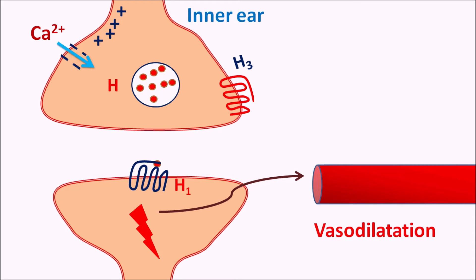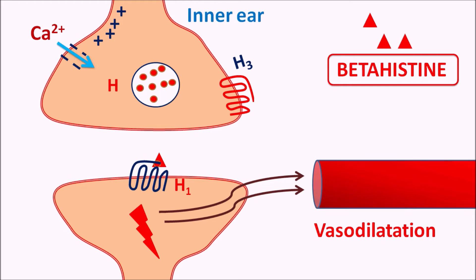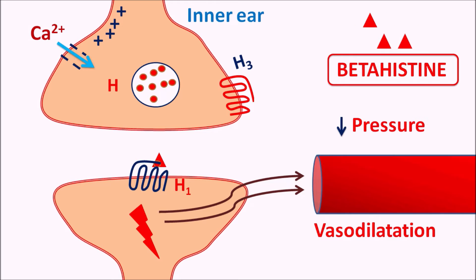When H1 receptors are activated, they produce vasodilation. In this way, histamine plays a key role in producing the vasodilatory response within the inner ear. But in Meniere's disease, we observe increased pressure within the endolymphatic space, so in order to reduce the pressure these blood vessels should be more dilated. Betahistine, as a histamine analog, can act on H1 receptors to further increase vasodilation, thereby reducing the pressure within the endolymphatic space, which improves symptoms such as vertigo, nausea, and tinnitus in patients with Meniere's disease.